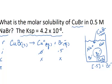So in equilibrium, when we reach the point of saturation, the amount of copper ion is going to be X, but the amount of bromide ion is going to be 0.5 plus X.